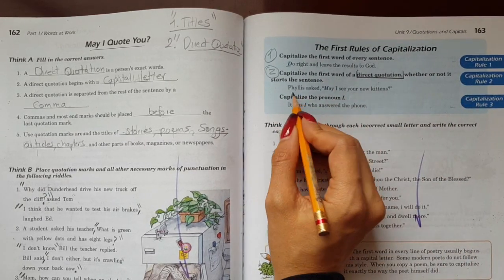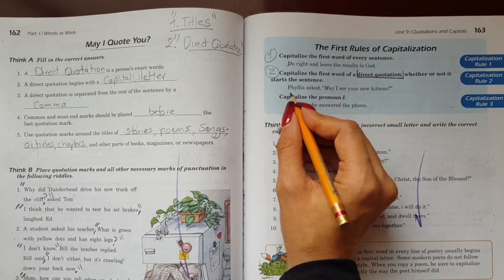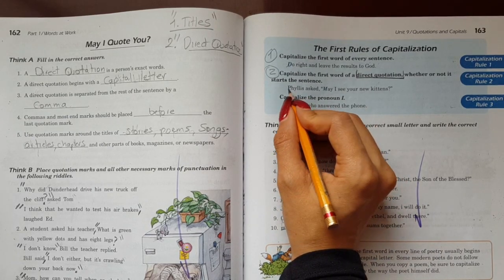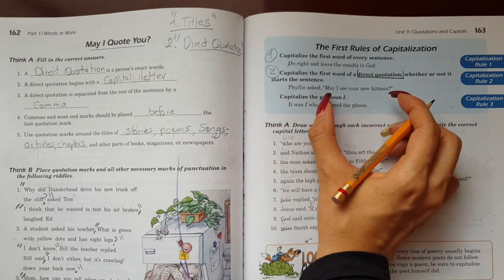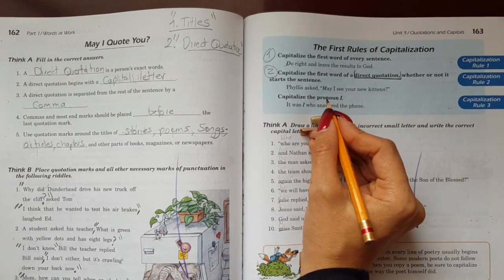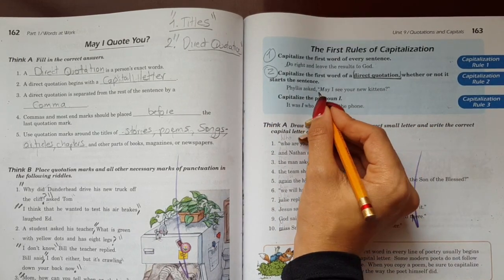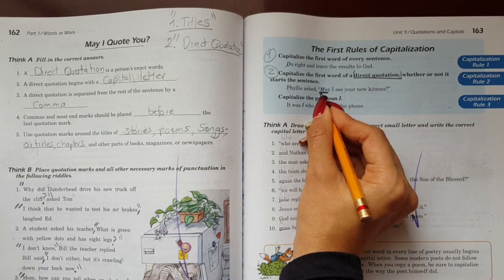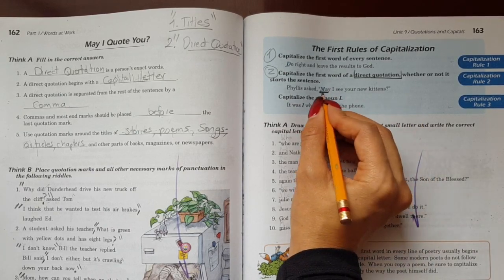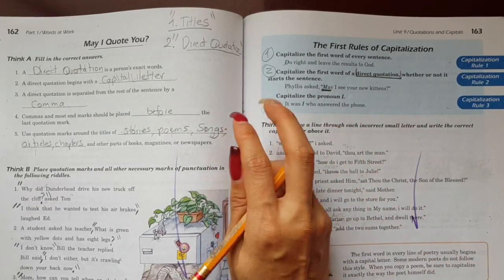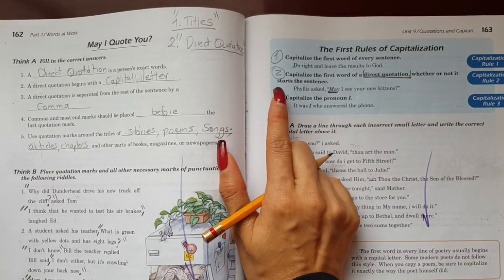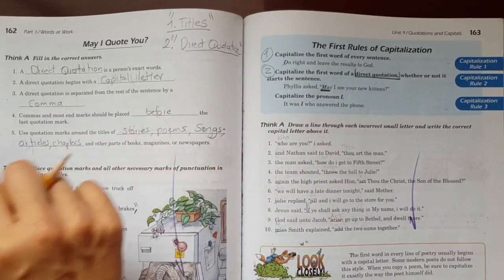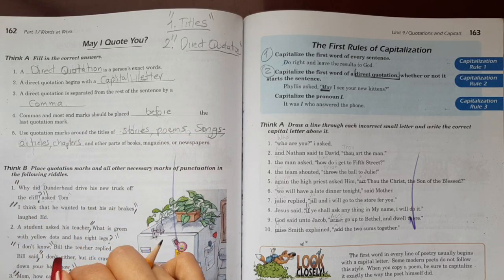For example, Phyllis, here it started with Phyllis. It didn't start with the direct quotation. When the direct quotation starts, this was a rule we had already seen, I must put capital letter. The first one starts with capital letter. So then rule number two we were already seeing with the topic of direct quotation.